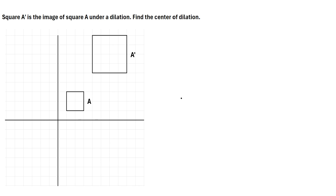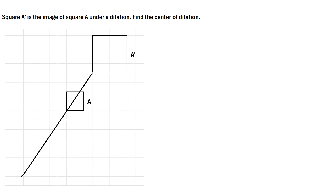Let's try one more example. This one says square A' is the image of square A under a dilation — find the center of dilation. We'll use the same trick: pick any corner of one figure, so let's say this bottom left corner of A', and draw a line to the same corner of the other figure — this bottom left corner of A. We'll extend the line pretty far, then pick one more corner, say this bottom right corner of A', and draw a line to the same bottom right corner of A, extending until the lines intersect.